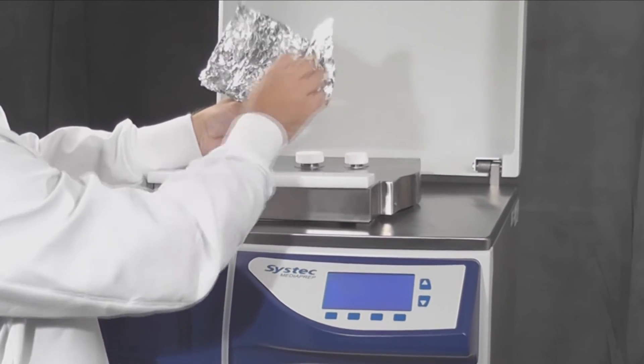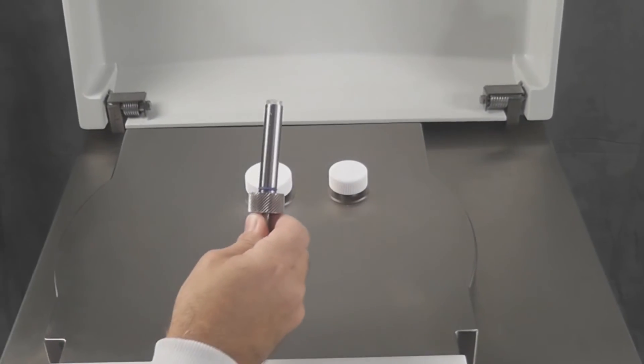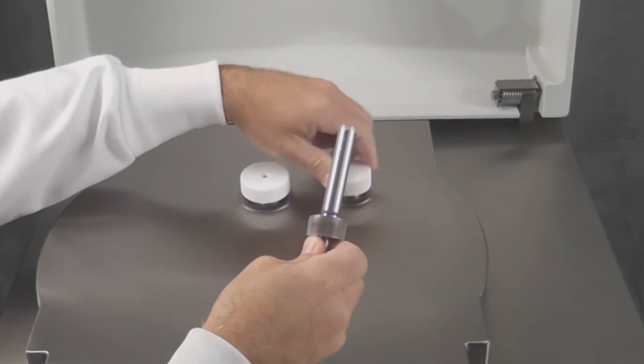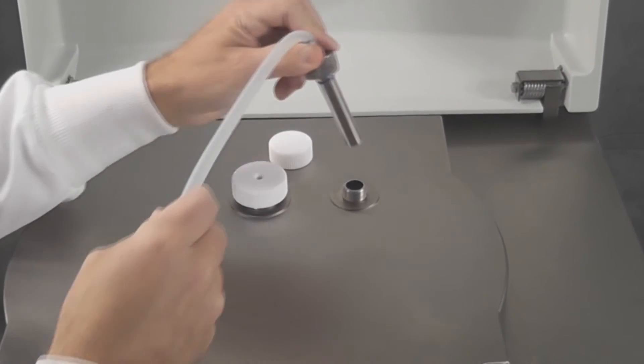After sterilization is complete, take the dispensing tube which has been autoclaved, remove the filling cap, and insert the dispensing tube.